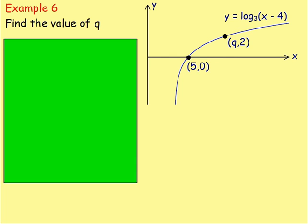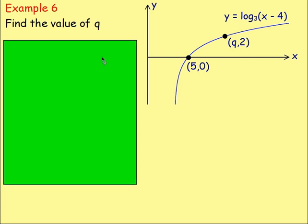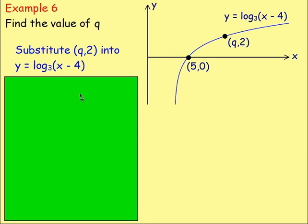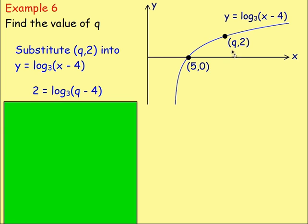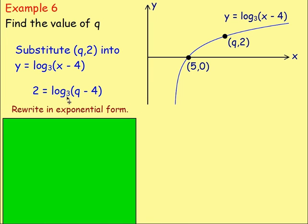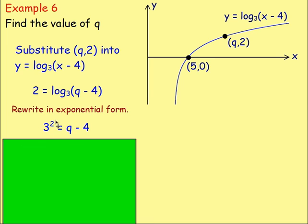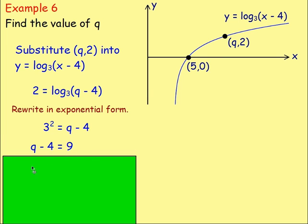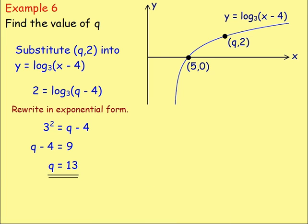Example 6: Find the value of q, given y equals log base 3 of (x minus 4) with point (q, 2). Substitute q and 2 in place of x and y: 2 equals log base 3 of (q minus 4). Rewrite in exponential form: 3 to the power of 2 equals q minus 4. Since 3 squared is 9, we have q minus 4 equals 9, therefore q equals 13.